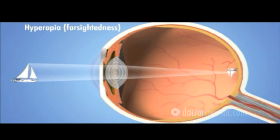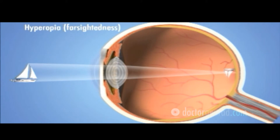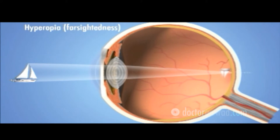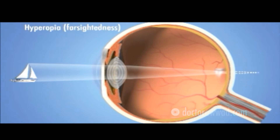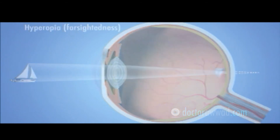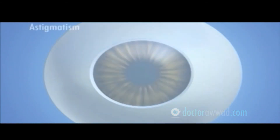Hyperopia, also known as farsightedness, occurs when the distance between the cornea and retina is too short. Light rays entering the eye have not yet come into focus when they reach the retina, so again the images are blurred.